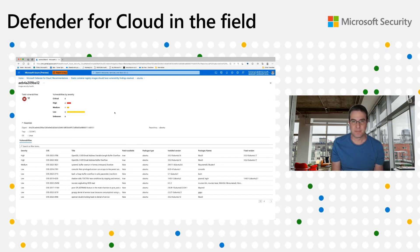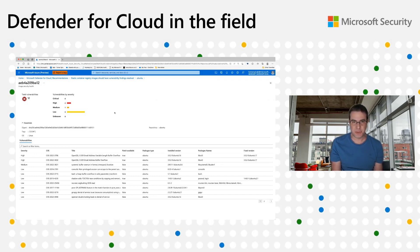Which vulnerability assessment engine are we using to scan those images? In the case of the existing public preview, we are using the Trivy open source engine to perform the scan. This is different from the existing scanner we use in Azure, which is Qualys. In the future, we are planning to work on that so customers will see results using only a single scanner.